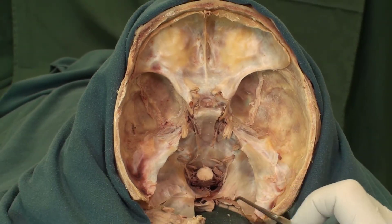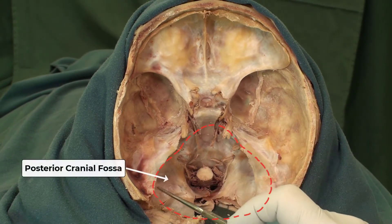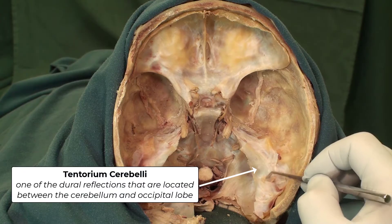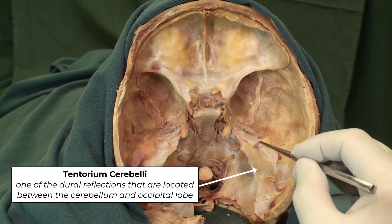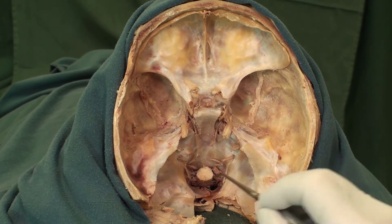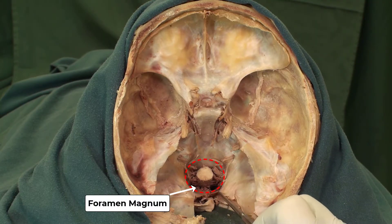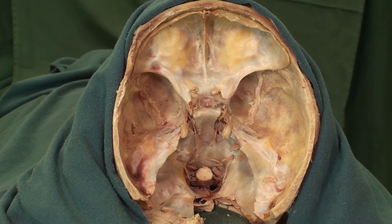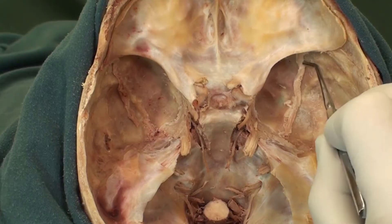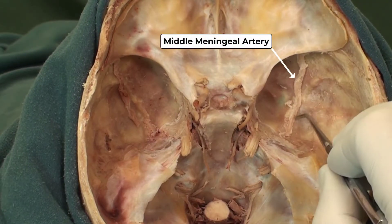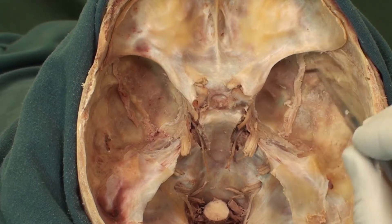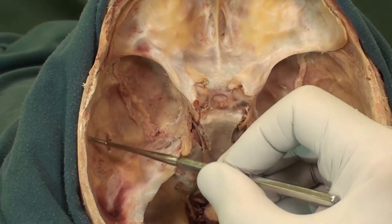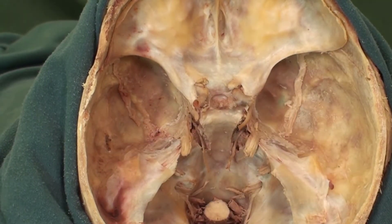Moving backward, here we have the posterior cranial fossa, and you can see the tentorium cerebelli attaching to the petrous part of the temporal bone. Here is the foramen magnum of the skull and the spinal cord back there. Also in the middle cranial fossa, we can see the middle meningeal artery running between the skull and the dura. You can see the grooves on the skull demonstrating the location of the branches of the middle meningeal artery.